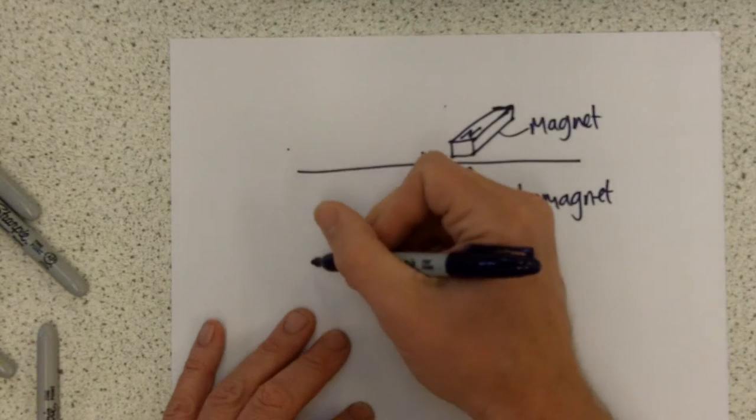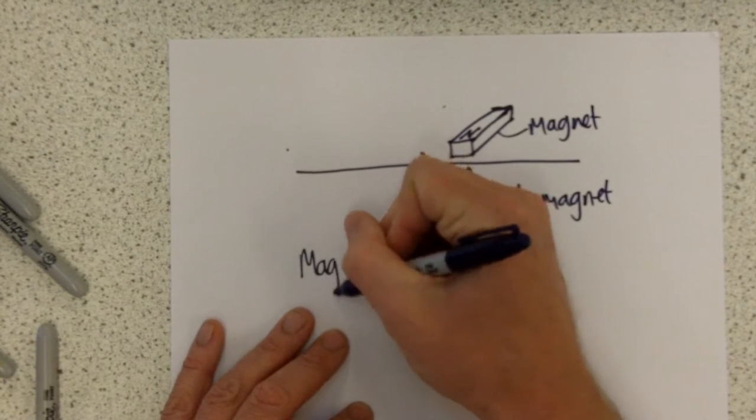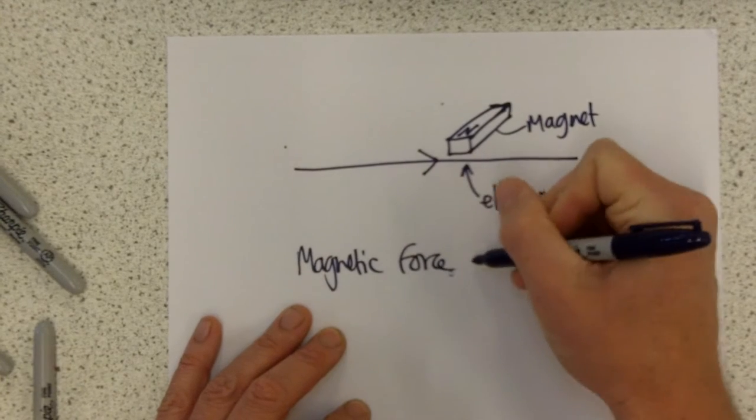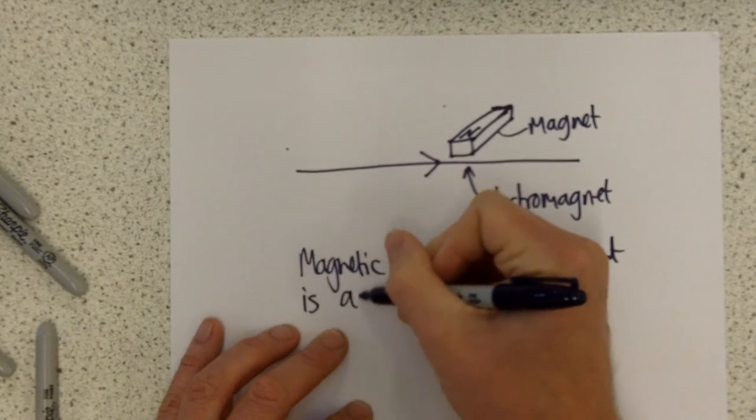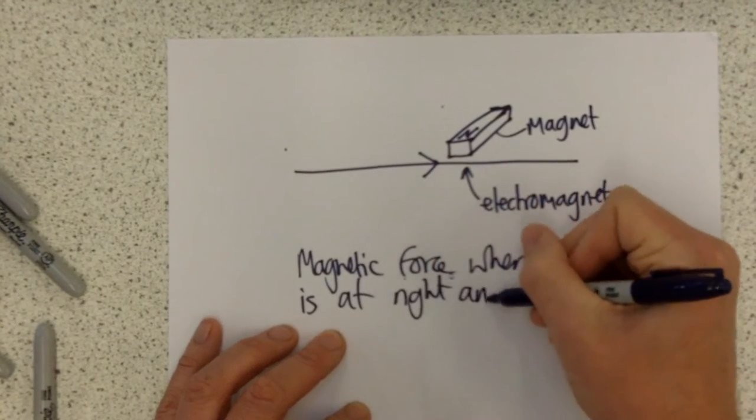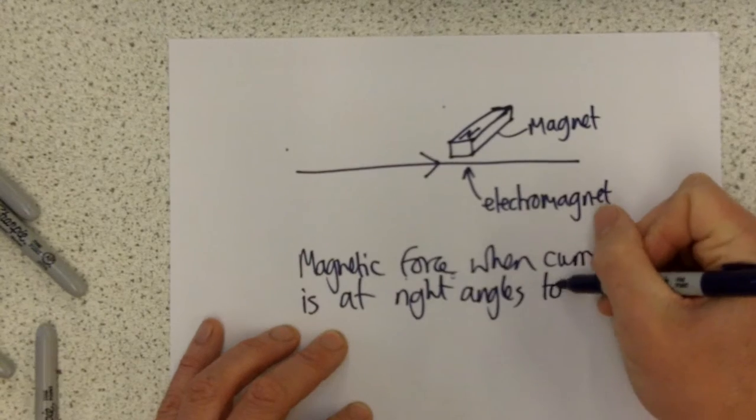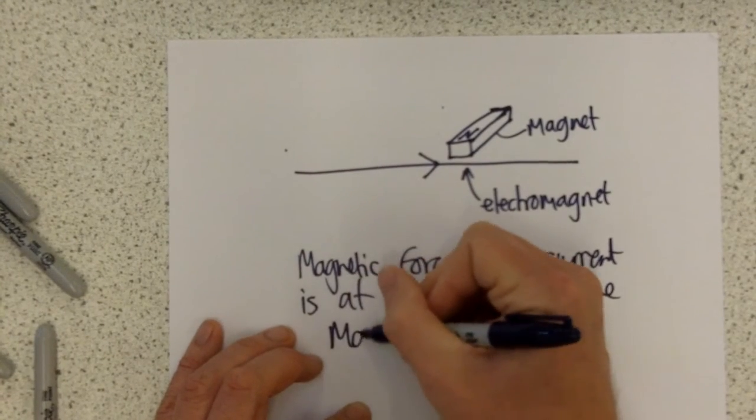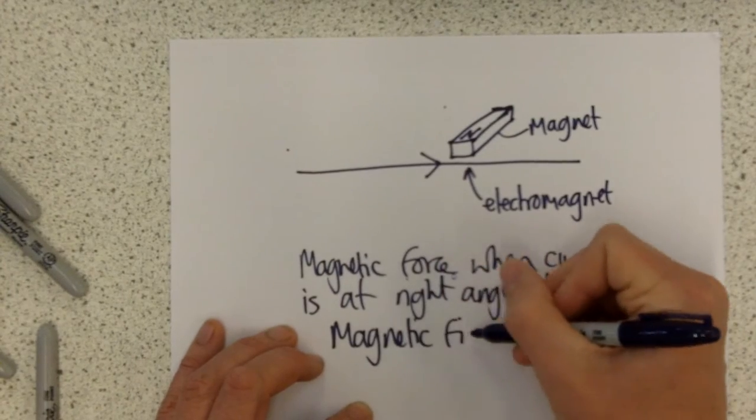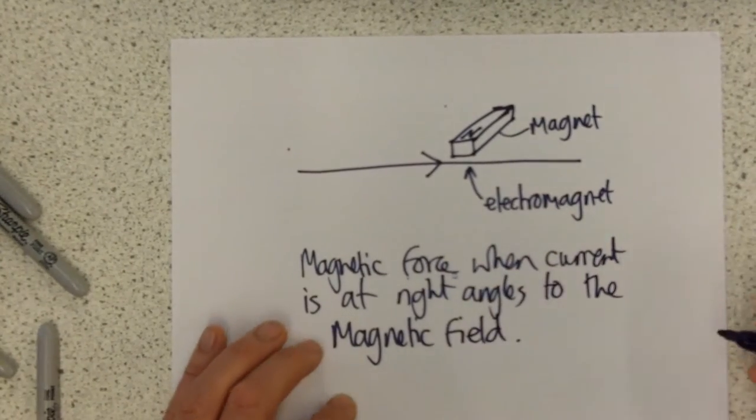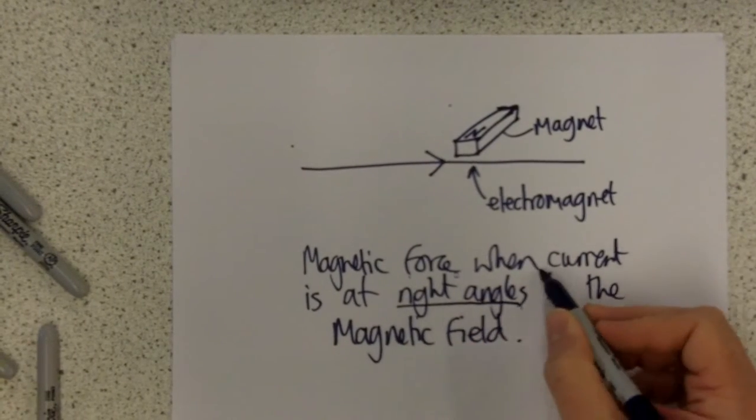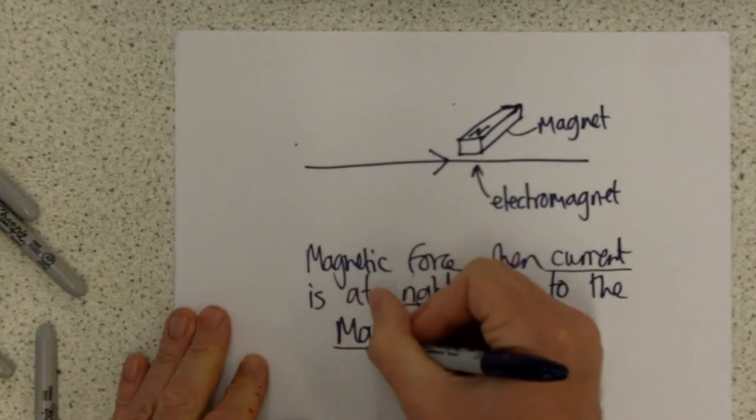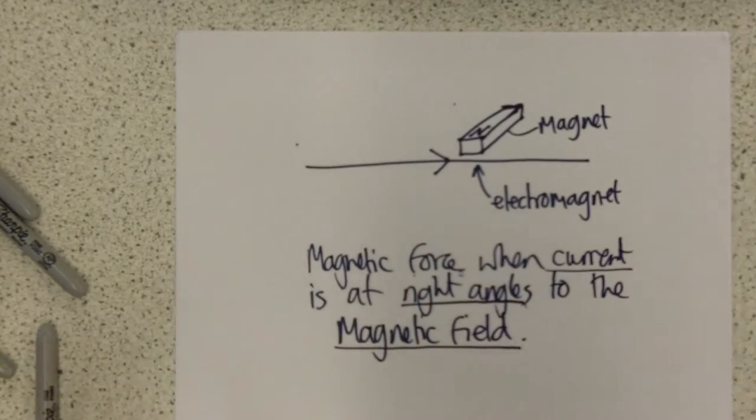The only thing to remember is that you get a magnetic force when the current is at right angles or 90 degrees to the magnetic field. So don't worry about your Fleming's left and right hand rules, you don't need them for this. All you need to know is that if the current is at right angles to a magnetic field created by another magnet, then those two things will interact and there will be a force.